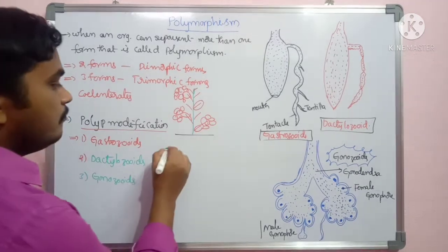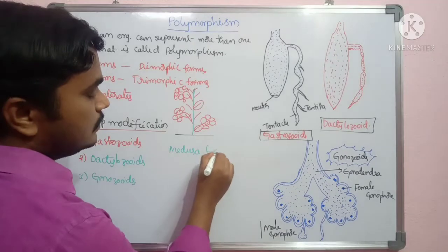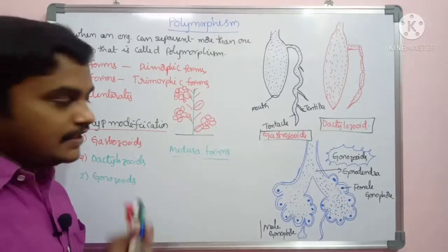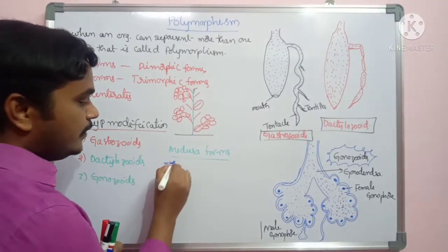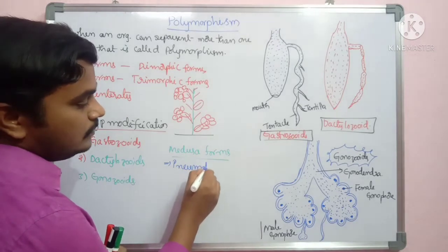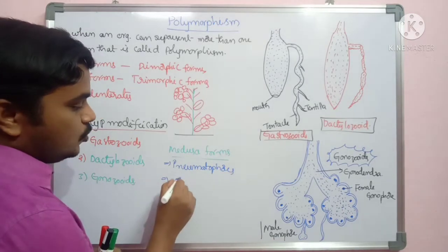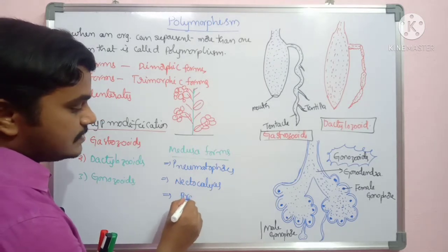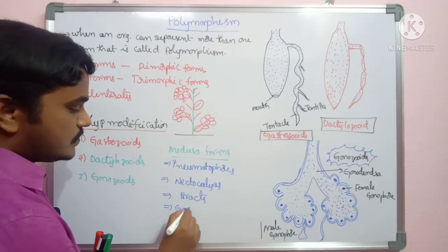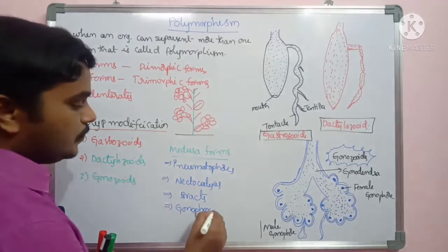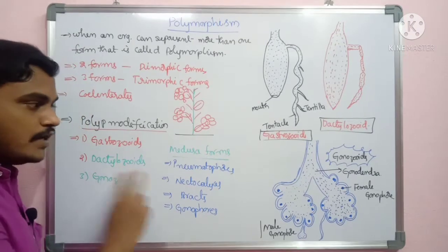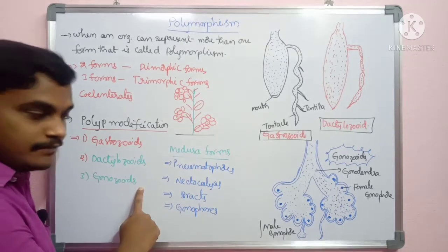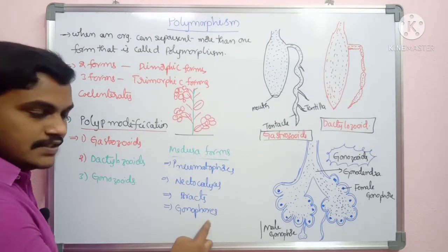Medusa forms include: pneumatophores, nectocalyx, bracts, and gonophores. So we have two major forms — polyp modification and medusa modification. Polyp modification gives gastrozooids, dactylozooids, and gonozooids. Medusa modification gives pneumatophores, nectocalyx, bracts, and gonophores. These major forms have sub-forms created, each with different functions.